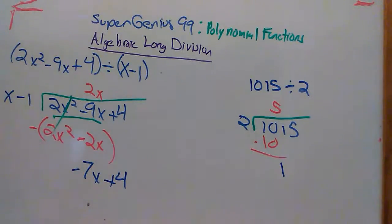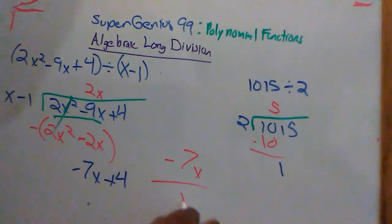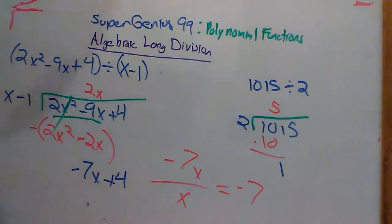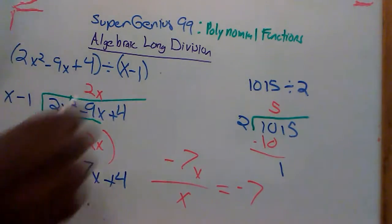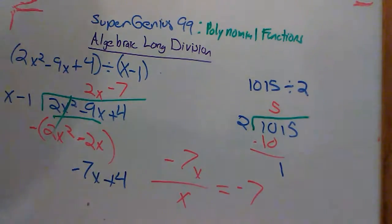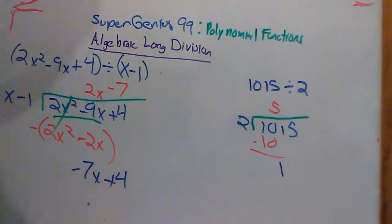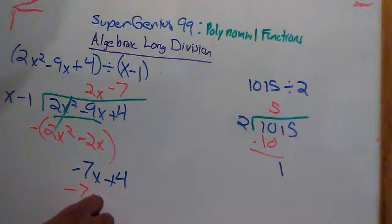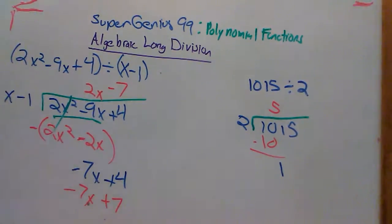And then what do we do? We wash, we rinse, and we repeat. We got 2, so we can do a step. How many times does x go into negative 7x? What times x gives me negative 7x? Negative 7x divided by x is negative 7. So put our answer up here. Then what do we do? We multiply. Multiply what? Negative 7 times x minus 1. What is negative 7 times x minus 1?